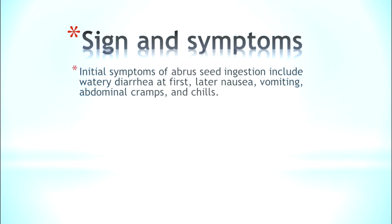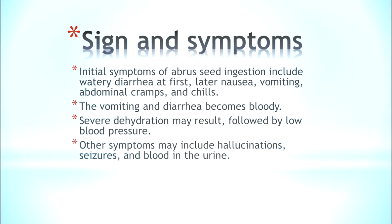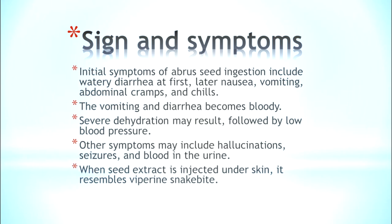Signs and symptoms: initially the symptoms include watery diarrhea, nausea, vomiting, and abdominal cramps with chills. Then the vomiting and diarrhea become bloody. Severe dehydration follows, which leads to a drop in blood pressure. Other symptoms include hallucination, seizures, and blood in the urine.